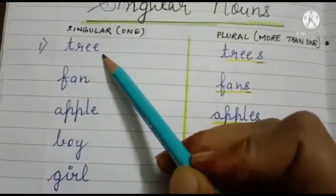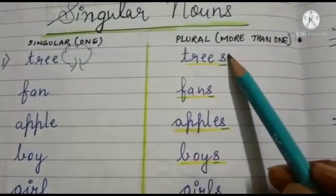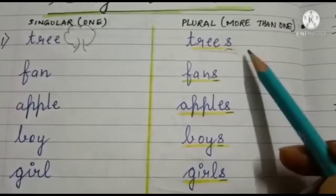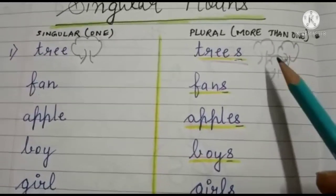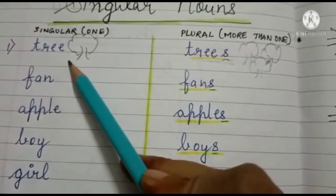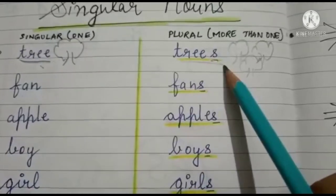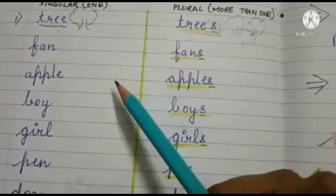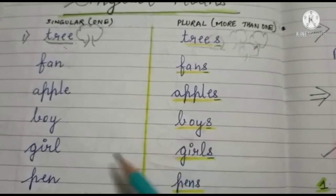For example, 'tree' is a singular word meaning one tree, but when I add 's' it becomes 'trees' — plural, meaning more than one. We can change singular words into plural by adding 's': fan → fans, apple → apples, boy → boys, girl → girls. So the first rule says we can change singular words to plural by adding 's'.